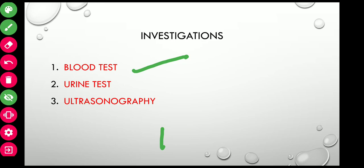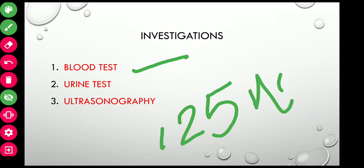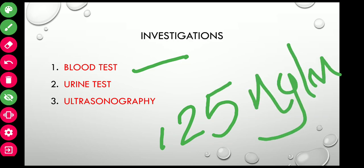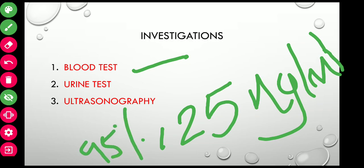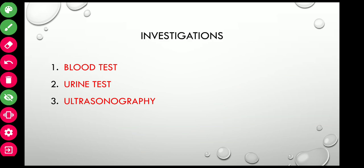Serum progesterone level should be checked. During pregnancy it should be above 25 nanograms per ml. If it is below 25 nanograms per ml, it definitely indicates abortion. A level above 25 nanograms per ml generally indicates a viable pregnancy in about 95% of cases.